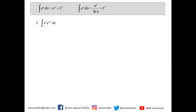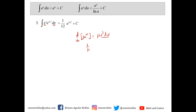The next one: we have the integral of x cubed e raised to 3x to the 4. The derivative of 3x to the 4 is 12x cubed dx. We have x cubed dx here, and that is represented by 1 over 12 du. So you now have the integral, which gives e raised to 3x to the 4 plus c.